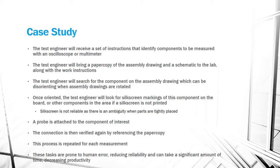A typical troubleshooting workflow begins when the test engineer receives instructions identifying components to be measured with an oscilloscope or multimeter. The engineer brings a paper copy of the assembly drawing, schematic, and work instructions to the lab. They search the assembly drawing for the component, which can be disorienting when rotated. Once oriented, they look for silkscreen markings on the board, though silkscreen is unreliable when parts are tightly placed. A probe is then attached, the connection verified against the paper copy, and this process is repeated for each measurement — all prone to human error, reducing reliability and productivity.